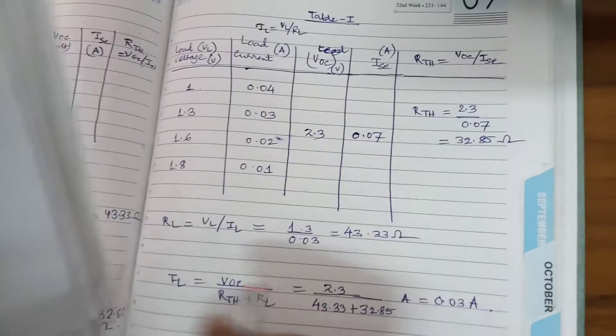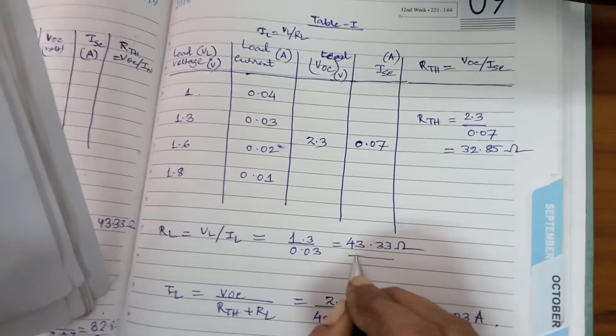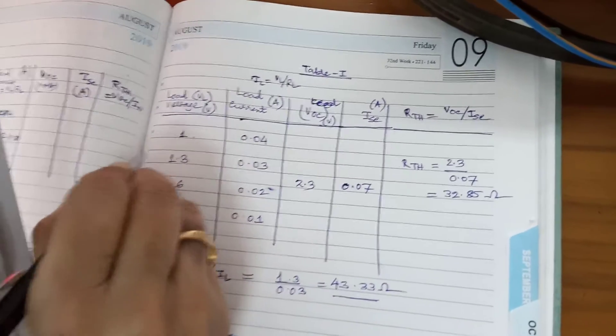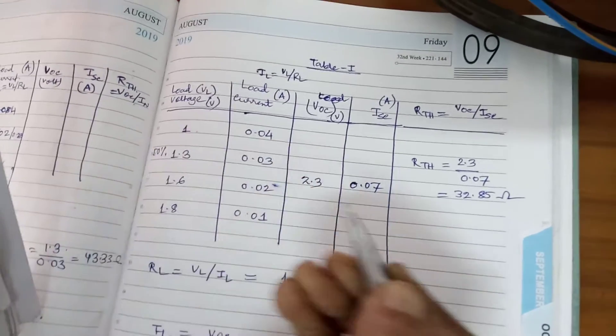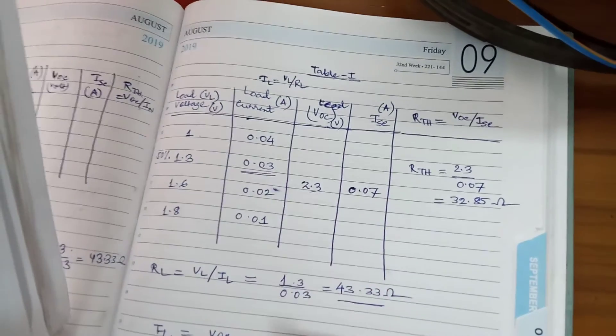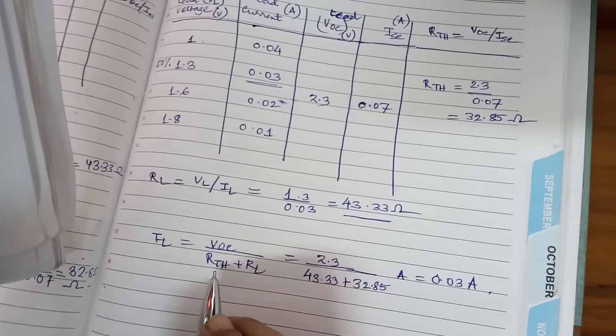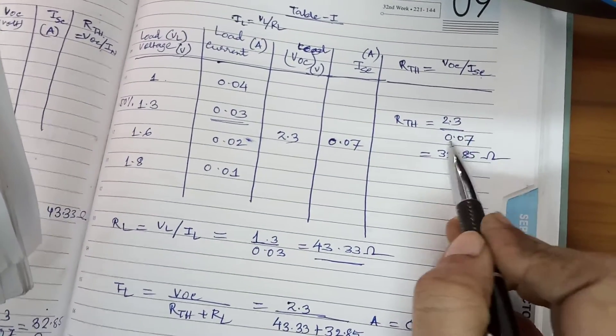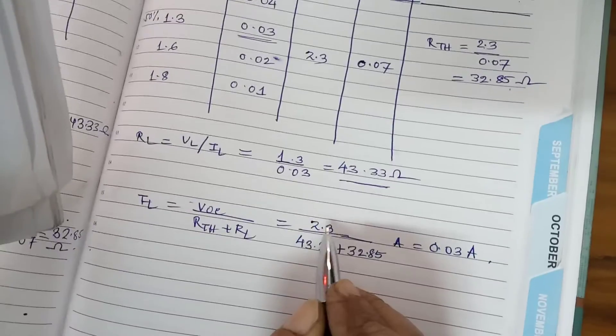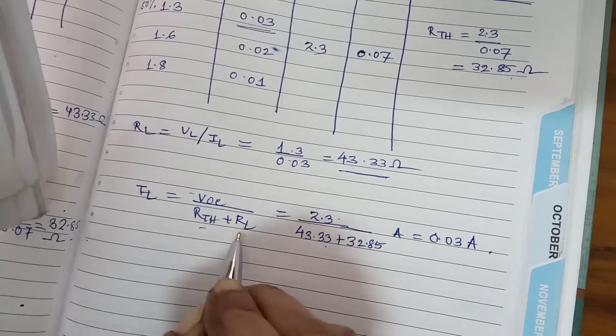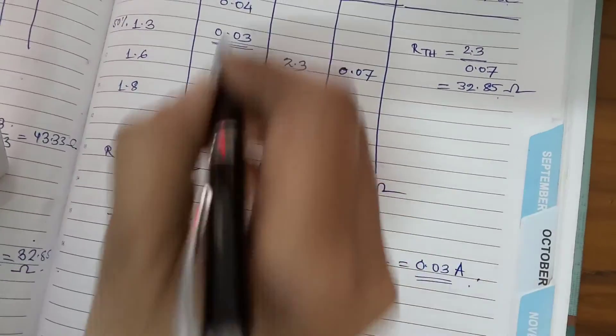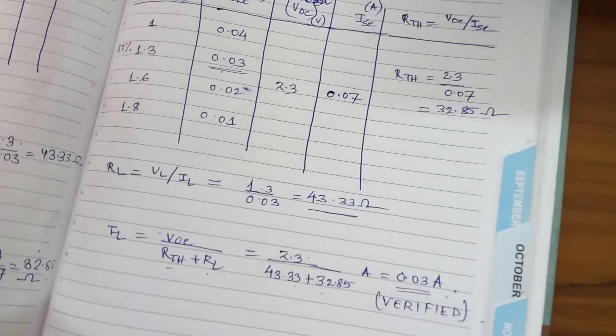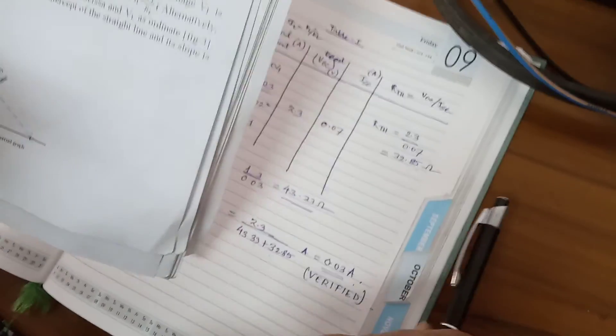Now let me explain how do you verify this. So RL we have roughly having 43 ohm, that is VL by IL. Suppose we are going to, and that is for 50% setting. So theoretically it is 50 and we are getting 43. So now we are going to verify whether 0.03 ampere load current is coming or not. How we will verify? This will be VOC by R Thevenin plus RL. How we are getting R Thevenin? That is VOC by ISC. So it is coming out to be 2.3 by 0.07, 32.85. So now VOC 2.3, R Thevenin 43.33, RL is 32.85. It is coming perfectly 0.03 ampere. That means it is being verified. The Thevenin's theorem is verified. So that is all about the Thevenin's theorem verification.